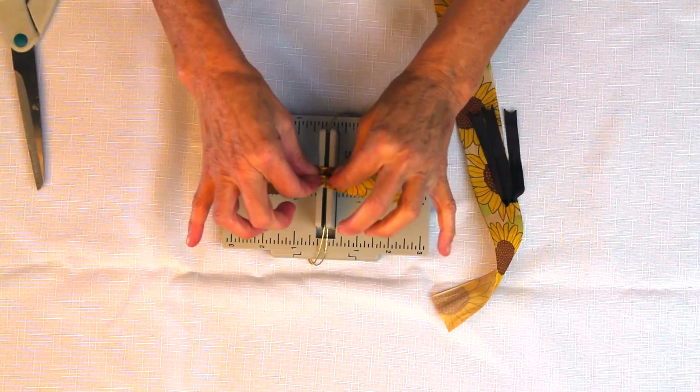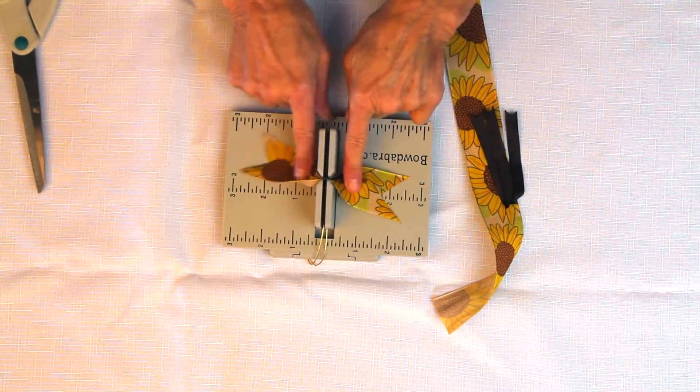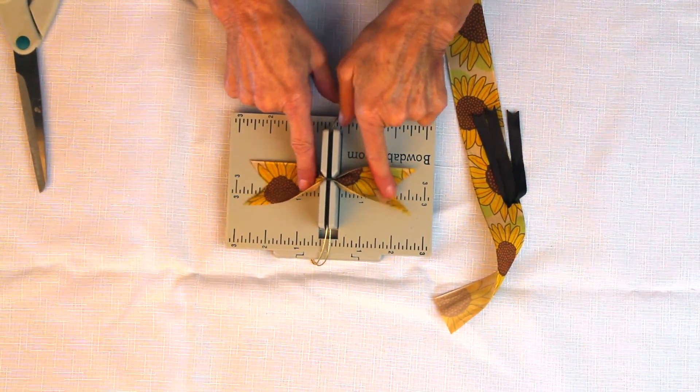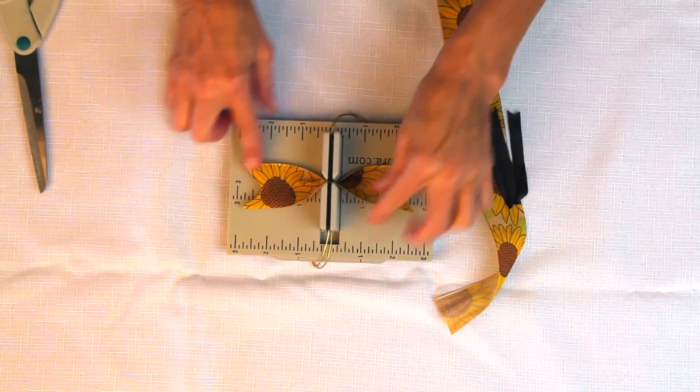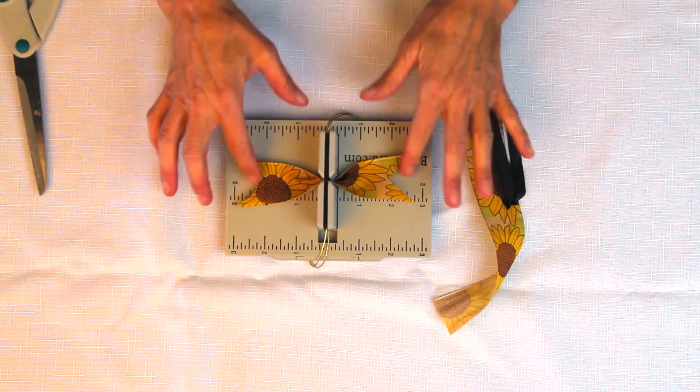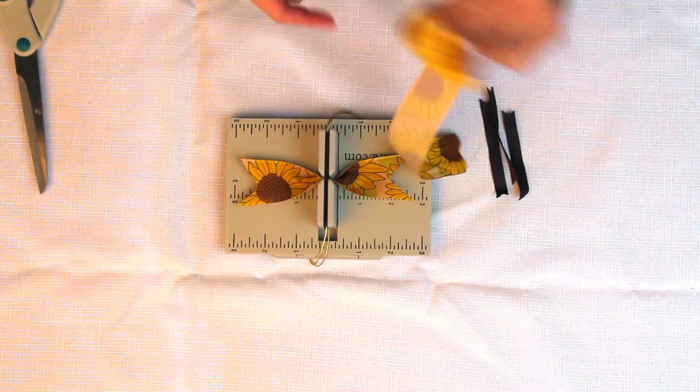I'm going to just scrunch it in the middle and make sure that I'm even. So I should be, yeah, I got that even in the middle. We've dovetailed the end and sealed it with a lighter.